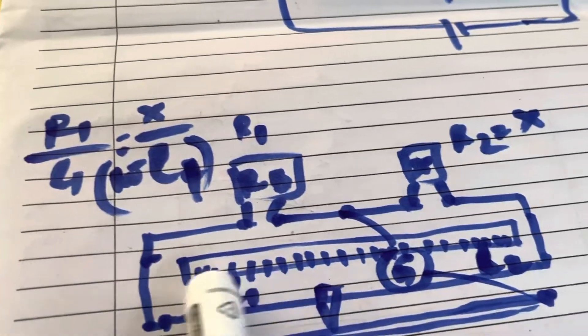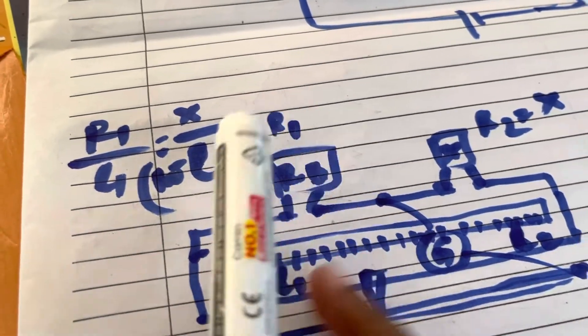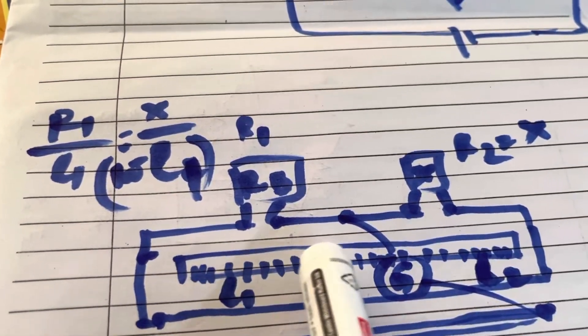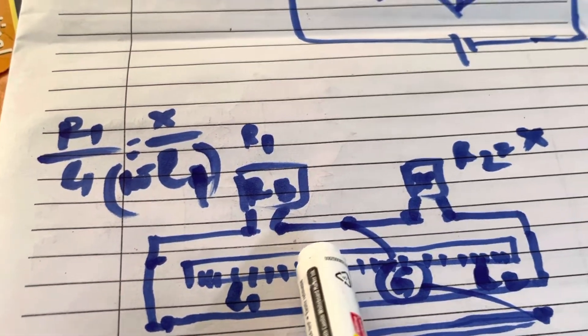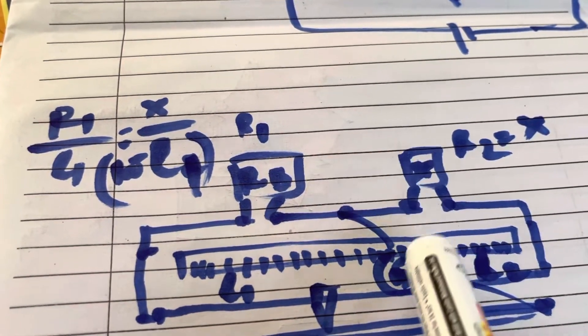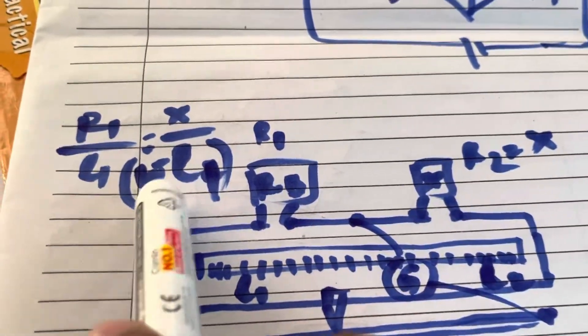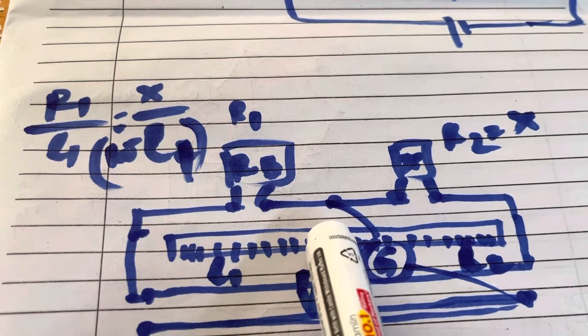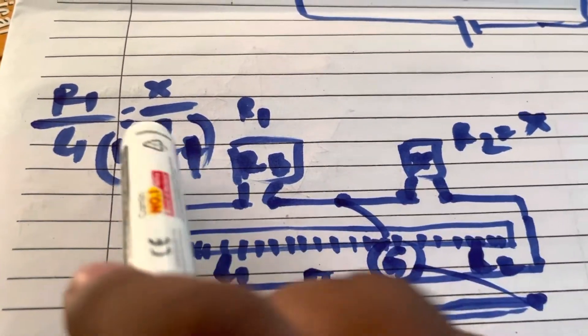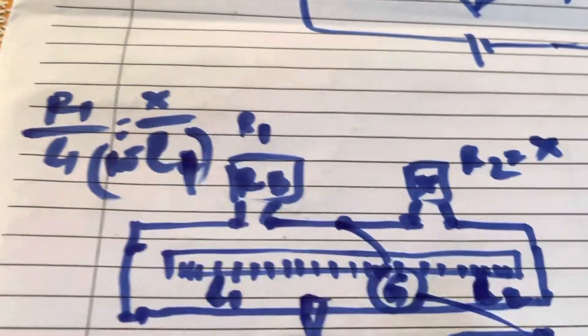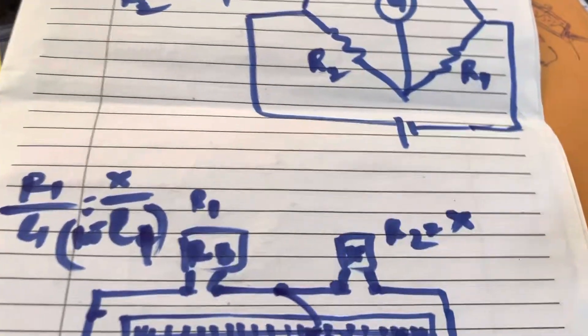L1 is the length from the scale over the conductor. For example, if you get zero deflection in the galvanometer at 40 centimeters, then L1 equals 40. The right part is 100 minus L1, which is 100 minus 40 equals 60. We then cross-multiply this relationship to find out the unknown resistance.